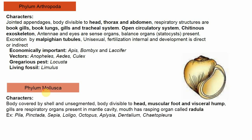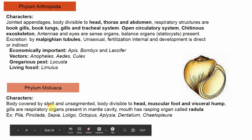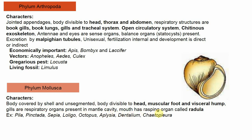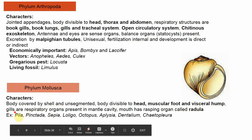The next phylum is Mollusca. The body is covered by a shell and is completely unsegmented, divisible into head, muscular foot, and visceral hump. Gills are the main respiratory structures and also aid in excretion, present in the mantle cavity. The mouth has a file-like rasping organ called the radula. Examples: Pila globosa (apple snail), Pinctada (pearl oyster), Sepia (cuttlefish), Loligo (squid), Octopus, Aplysia (sea slug), Dentalium (tusk shell), and Chiton.